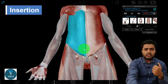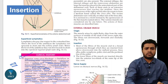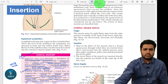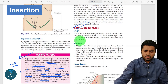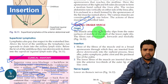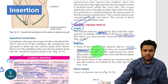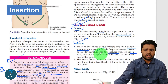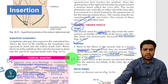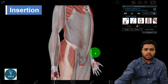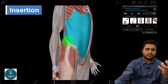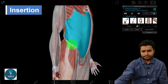To summarize: the origin is from the lower eight ribs. The insertion is via a broad aponeurotic structure to the xiphoid process, linea alba, pubic symphysis, pubic crest, and the pectineal line of the pubis. There is also an insertion onto the hip bone — specifically onto the ilium.